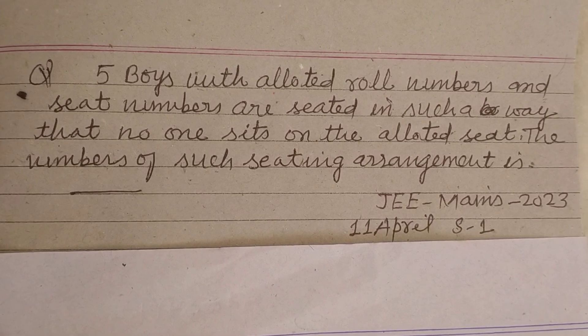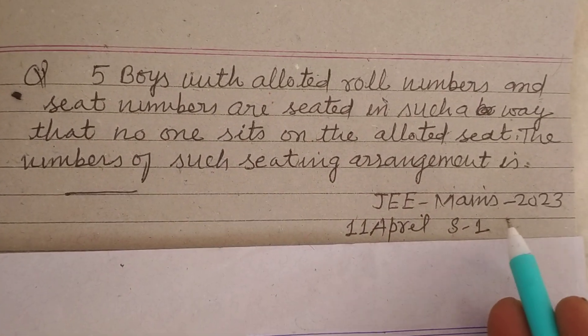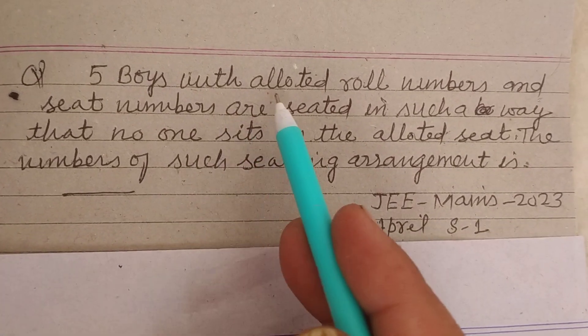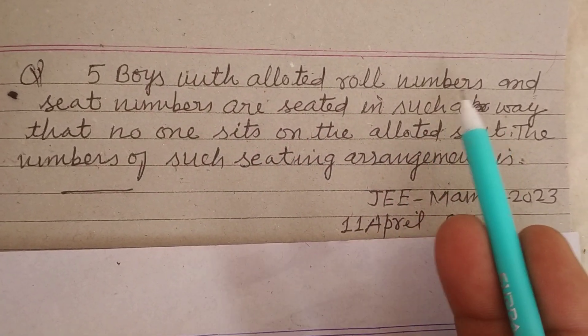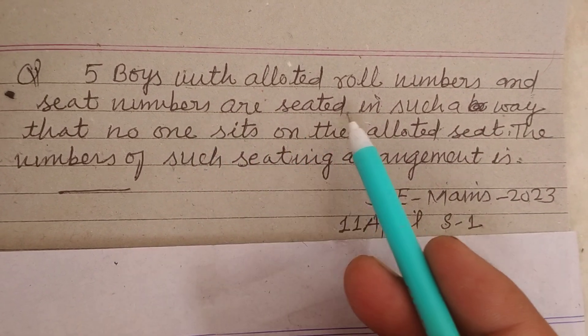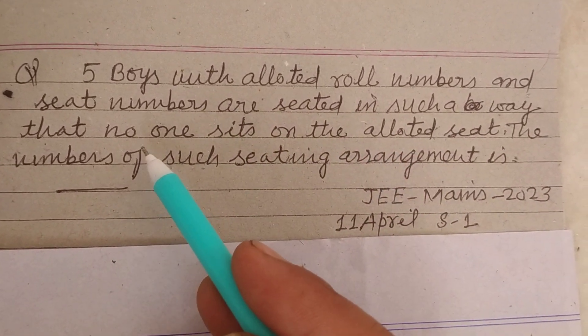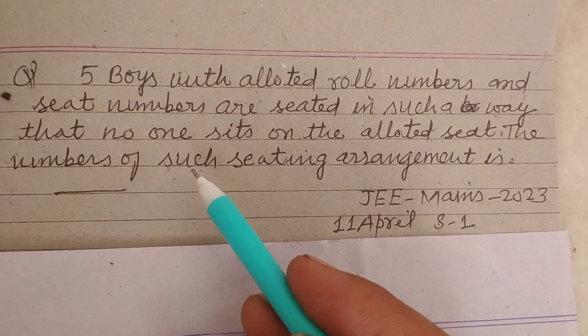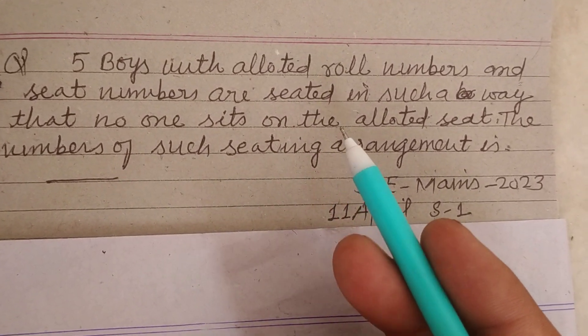Hello students, welcome to this YouTube channel. This is a question from JEE Mains 2023, 11th April shift first. Five boys with allotted roll numbers and seat numbers are seated in such a way that no one sits on the allotted seats. The number of such seating arrangements is?